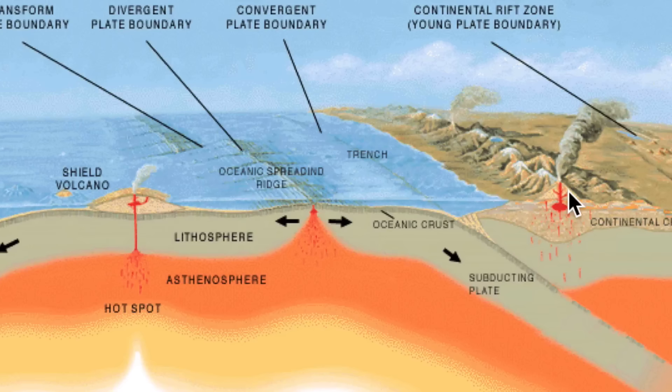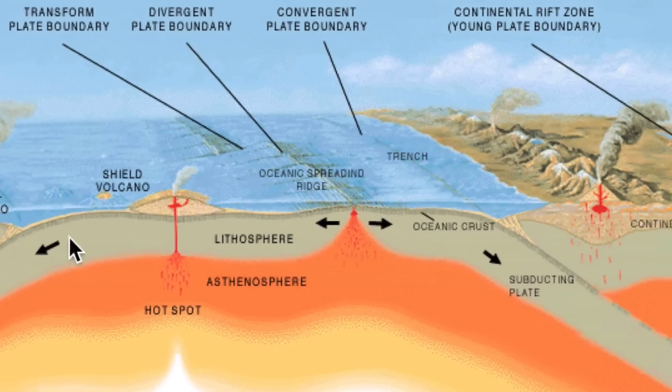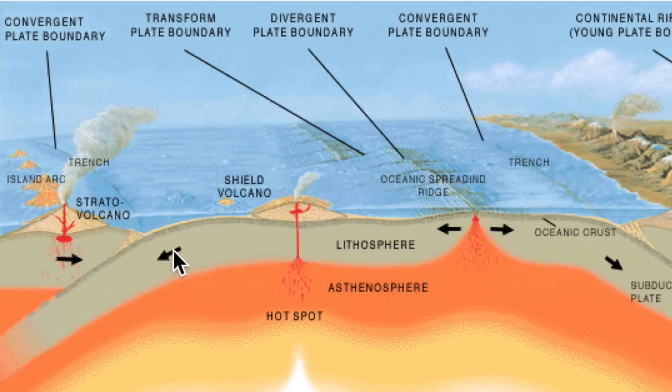An example could be the Cascades in Washington State. We could also have a convergent boundary right here where we have an oceanic plate going underneath another oceanic plate. And we get this island arc like the Aleutian Islands in Alaska.